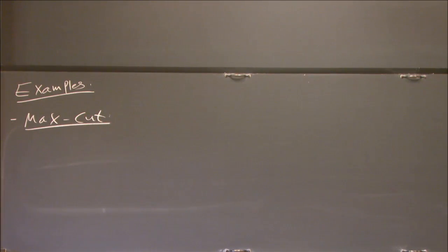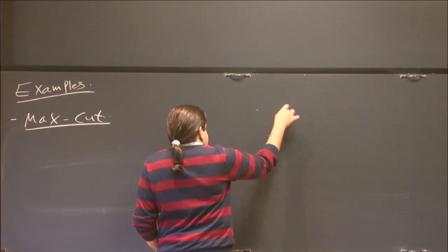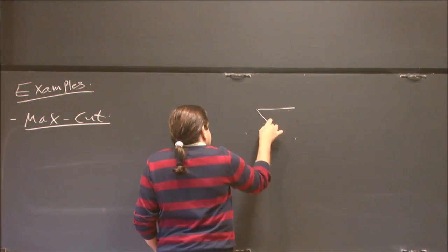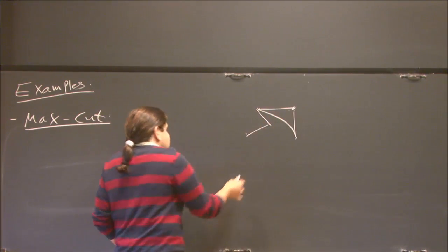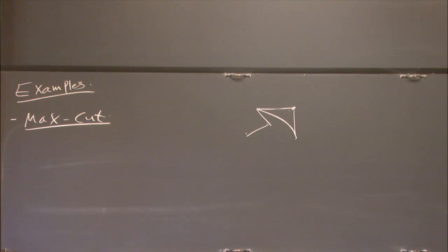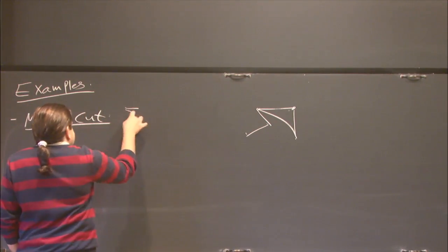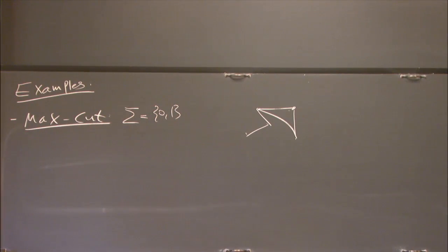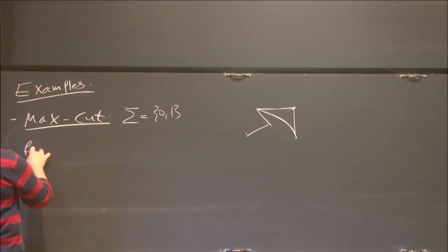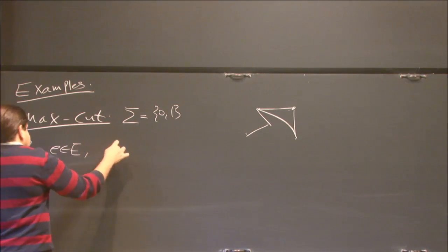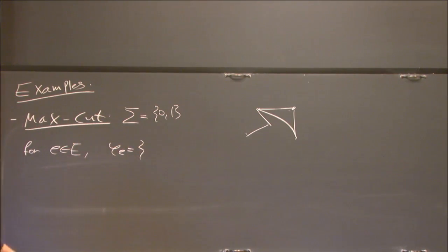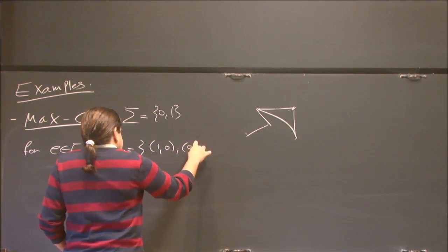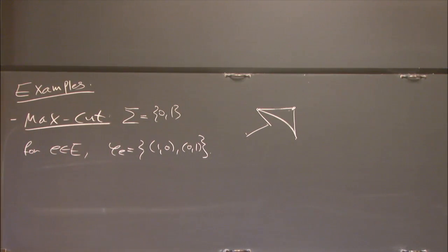How do we formulate MaxCut as a label cover? We have some graph and we want to partition the vertices into two parts so that as many edges cross from one side to the other. The way to formulate it is to take sigma to be {0,1}, where 0 is the left side and 1 is the right side, and for every edge the constraint is that both endpoints get different values.